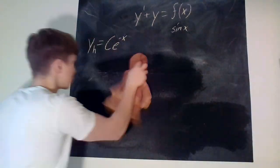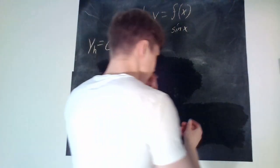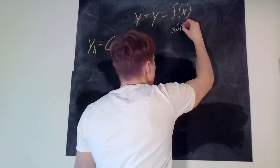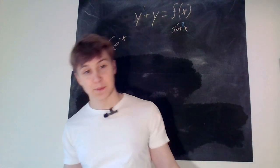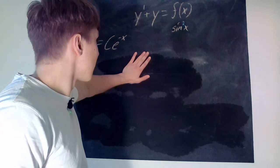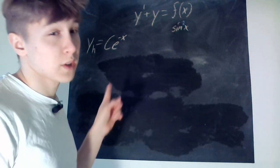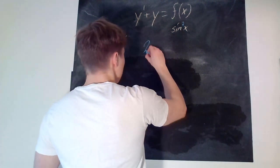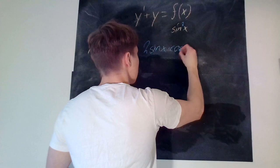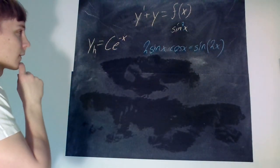Now let's move on to the last one. Instead of sin x, we now have sin squared of x. We note that if y equals sin squared of x, then y prime equals 2 sin x times cos x, which is just sin 2x. So the derivative of sin squared is sin 2x. If we just guessed sin squared, it obviously wouldn't work.